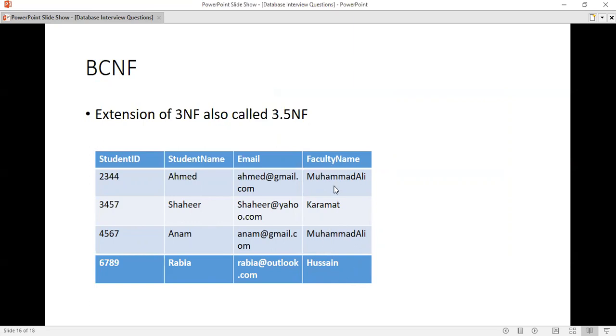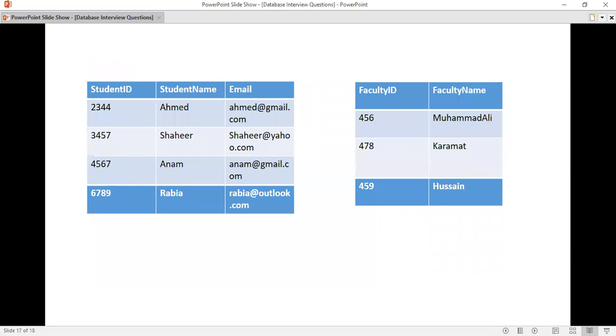So, what is 3.5 NF? What happens in 3.5 NF is that in any column, if there is a value that is repeated, then my 3.5 NF is not converted. What do we do to resolve that? We have made a table for student details and one second table for faculty details. So, this is my Boyce-Codd converted. This is my normal form.